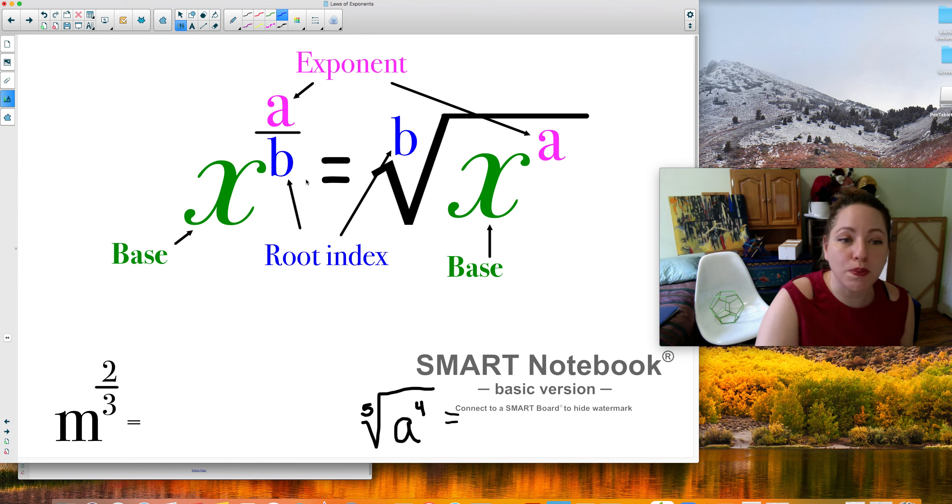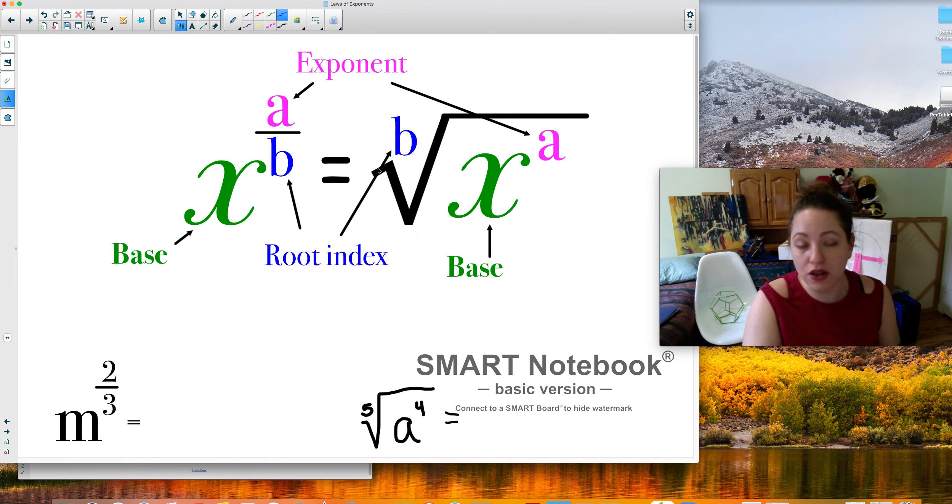So this bottom number, the bottom number is the root index. The bottom of the fraction, when you have a fractional exponent, it becomes a root, a radical. So fractional exponent becomes a radical. A radical really just means that you have a fraction as an exponent. So you've probably never seen fractional exponents before. This is new. You're rewriting it as a root.